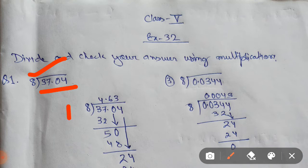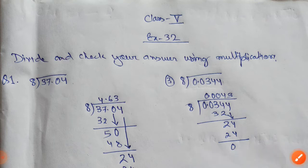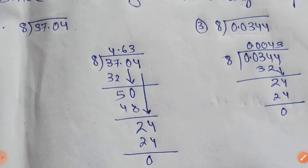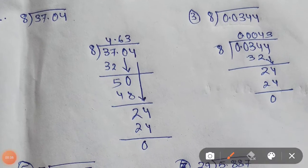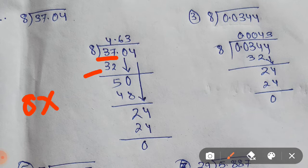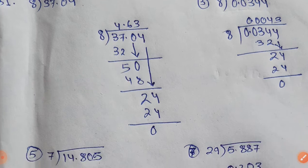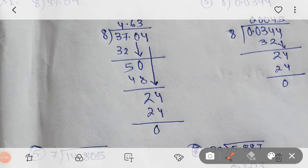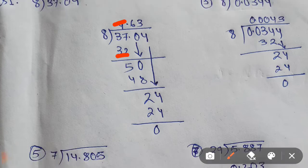You will write it in this place. Now you try to find out 37 in the table of 8. In the table of 8 we do not have 37, but we have a number smaller than 37, and that is 32 because 8 times 4 is 32. So we will write 4 here and then 32 here.